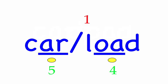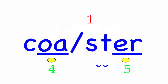Coaster. The coaster at the state fair was scary. First syllable: co, two sounds, K-O. Second syllable: ster, three sounds, S-T-ur. Coaster — mark the word.